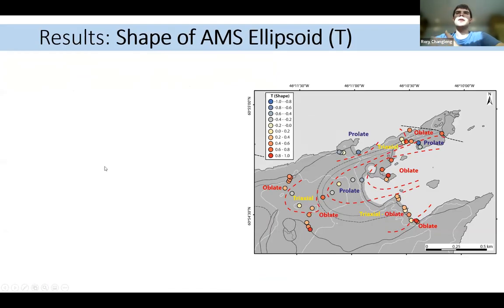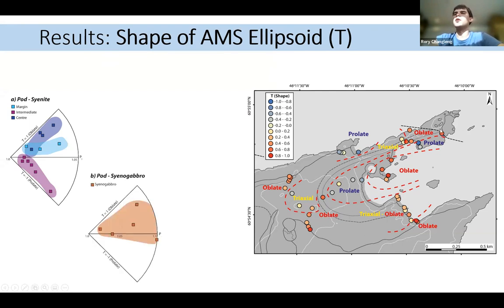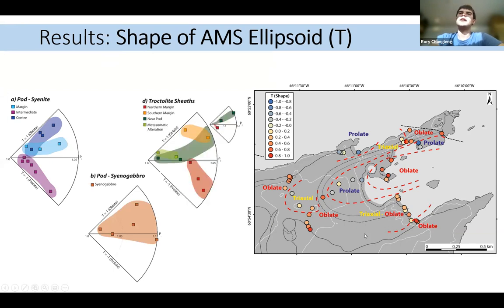So if we look at the shape ellipsoid now as well, we can see that we generally have oblate shapes in the center of this syenite with a prolate intermediate zone, and then a triaxial to oblate zone here at the margin of the syenite and going into the syenogabbro. And this is also reflected in the troctolite sheets being triaxial to oblate, with the exception of one prolate zone in the north.